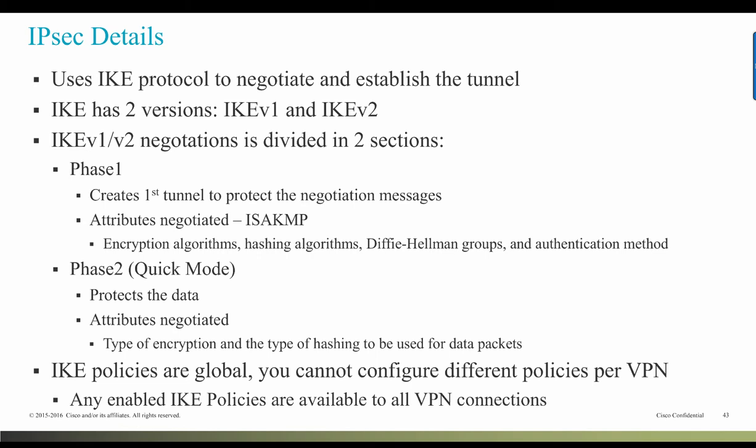IPsec negotiation comprises two phases. Phase 1 negotiates a security association between two IPsec peers, which enables the peers to communicate securely in Phase 2. An IPsec proposal is basically a set of algorithms that two peers use to secure the negotiation between them. IKE negotiation begins by each peer agreeing on a common shared IKE policy, which states which security parameters are used to protect subsequent IKE negotiations.